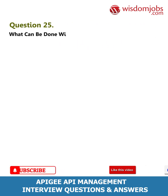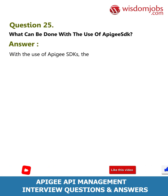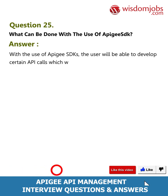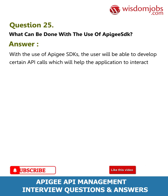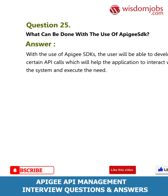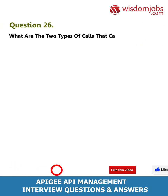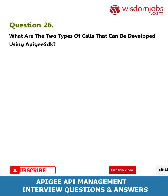Question 25: What can be done with the use of the Apigee SDK? Answer: With the use of Apigee SDKs, the user will be able to develop certain API calls which will help the application to interact with the system and execute the required functionality. Question 26: What are the two types of calls that can be developed using the Apigee SDK?